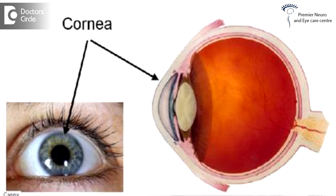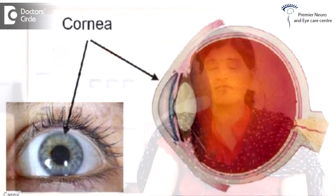The cornea is the transparent tissue of the eye which is mainly important for accurate vision. It has a very high refractive power, and hence any laser used to mould its shape can correct the refractive errors of the person.